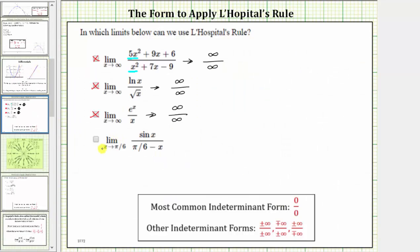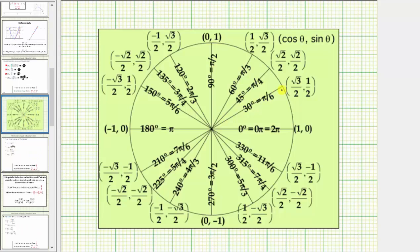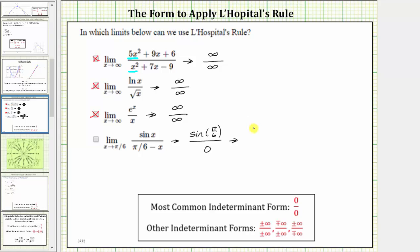For the last limit, we have the limit as x approaches π/6 of sin(x) divided by (π/6 − x). Looking at the numerator, as x approaches π/6, sin(x) approaches sin(π/6). Looking at the denominator, as x approaches π/6, π/6 − x approaches zero. Since sin(π/6) equals one-half — which we can verify on the unit circle — this limit is in the form of one-half divided by zero, which does not fit one of the indeterminate forms for L'Hopital's rule. Therefore, L'Hopital's rule does not apply for this last limit.